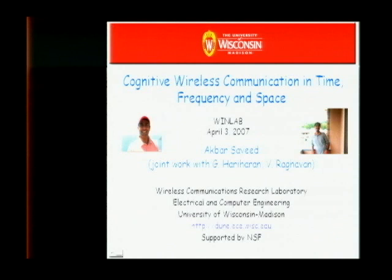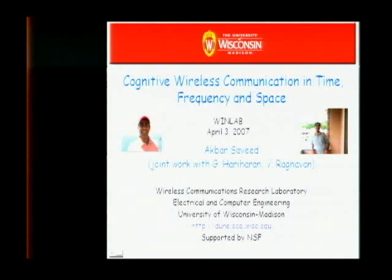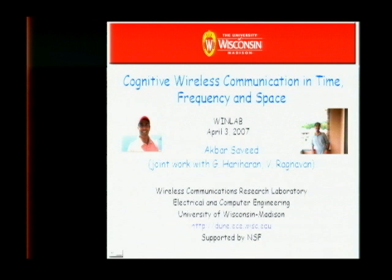I'm going to be talking about cognitive communication and time, frequency, and space — this is joint work with two of my students. One of the motivations for cognitive radio is that spectrum is getting congested. There are a lot of devices, and we want to have these devices sense and adapt to the local wireless environment to more efficiently use the spectrum. What I'm talking about is a different angle: what capabilities do emerging RF frontends like wideband transceivers and reconfigurable antenna arrays provide in that space of optimization, and in particular how we can exploit multipath.